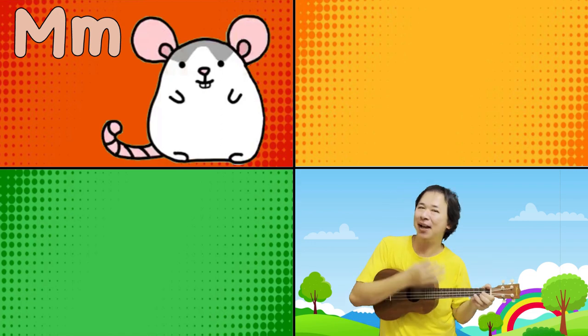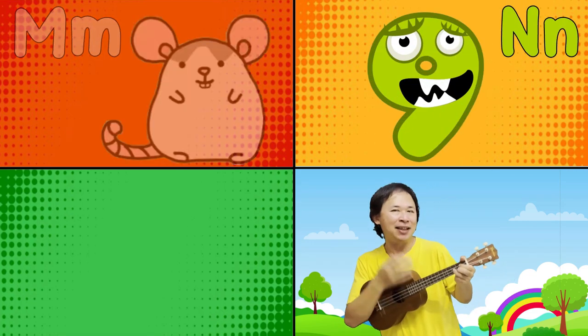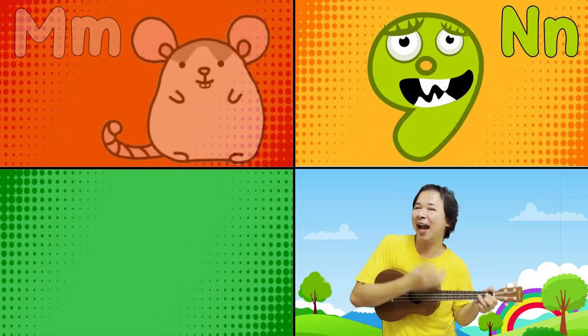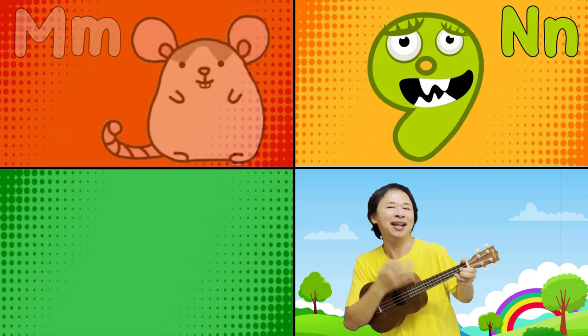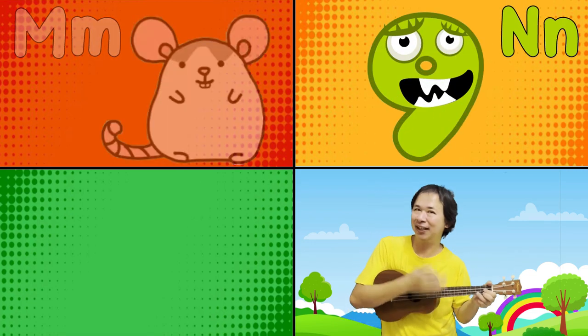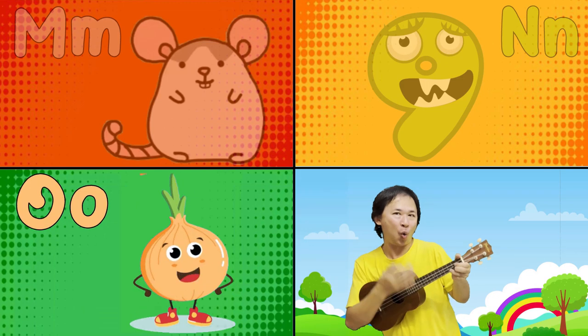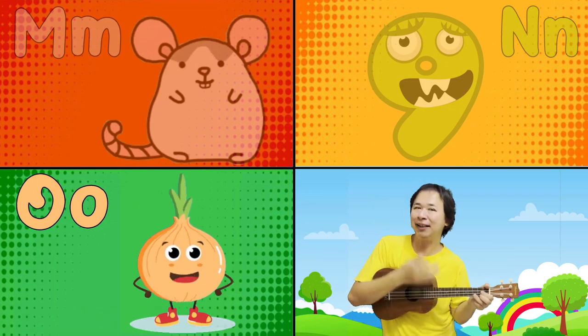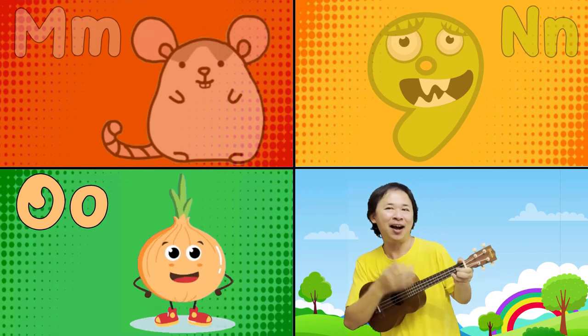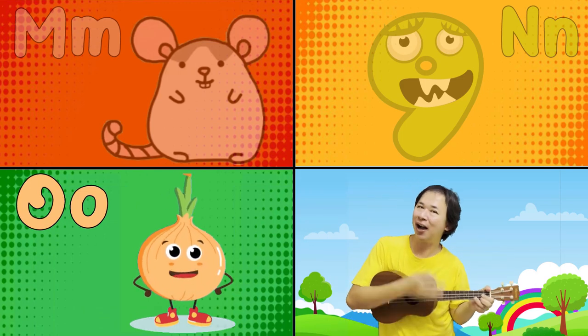M is for mouse, m, m, m. N is for nine, n, n, n. O is for onion, ah, ah, ah.